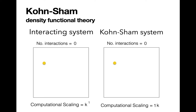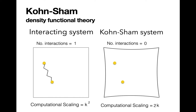The Kunsham system consists of completely non-interacting electrons, whereas within the many-body system the electrons experience the Coulomb interaction. The Kunsham system is defined to have the exact same electron density as the many-body system. When the many-body system and the Kunsham system each consist of just one electron, they are identical.